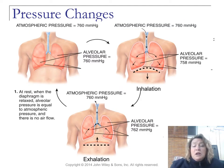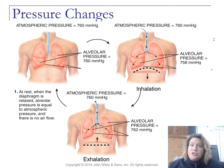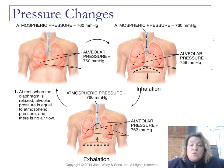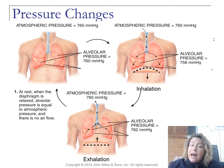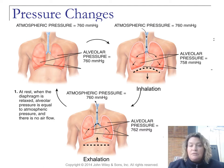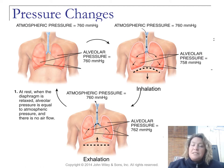The actual process of inhalation and exhalation is all about pressure changes. Atmospheric pressure at sea level is 760 millimeters of mercury, and we use that to explain pressure changes. That will be different at high altitude or in Denver, Colorado, but for our purposes we use 760 as the standard.